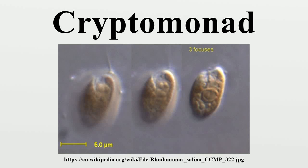The cryptomonads are a group of algae, most of which have plastids. They are common in fresh water, and also occur in marine and brackish habitats. Each cell is around 10 to 50 micrometers in size and flattened in shape, with an anterior groove or pocket. At the edge of the pocket there are typically two slightly unequal flagella. Some may exhibit mixotrophic characteristics.